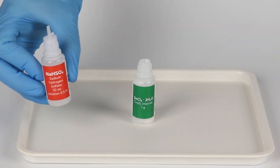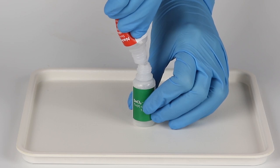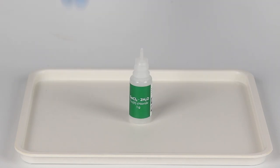Open the bottle of tin chloride and pour one bottle of sodium hydrogen sulfate solution into it. Securely insert the tip and close the bottle using the red cap.